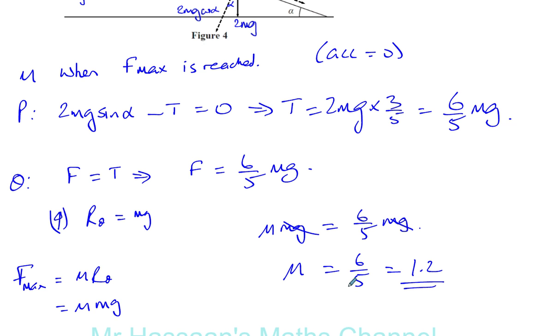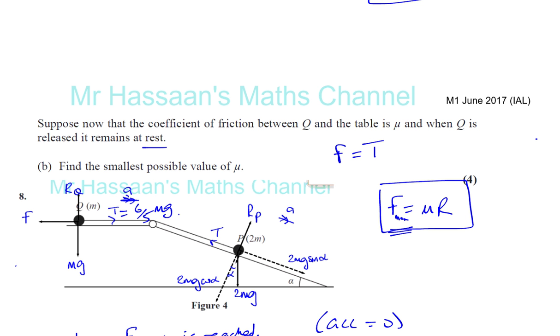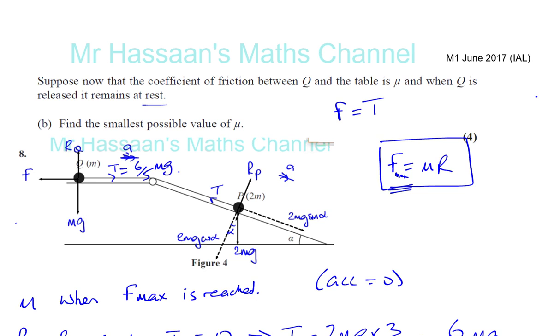Okay, that's 1.2. So there we have our value of mu. Mu is going to be 1.2. Why? Because this thing is at rest. It's not moving. But F max has been reached. It's a limiting value. So there we have the answer to part B of the same question. And that's question number 8. Finished.